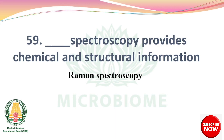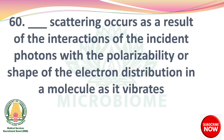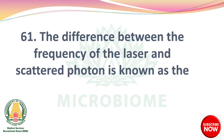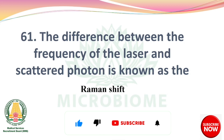Next, dash spectroscopy provides the chemical and structural information — Raman spectroscopy. Next, dash scattering occurs as a result of interactions of the incident photons with the polarizability or shape of electron distribution in a molecule as it vibrates — Raman scattering. The difference between the frequency of the laser and scattered photon is known as the Raman shift.